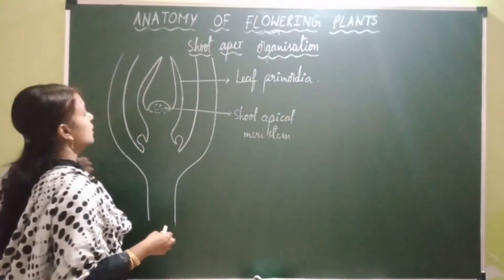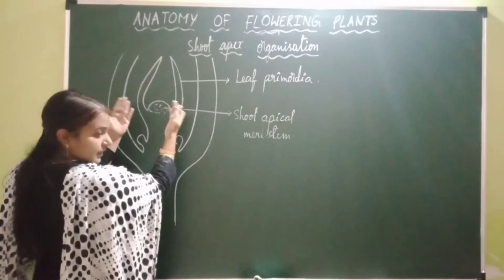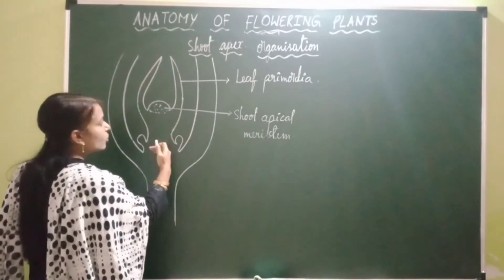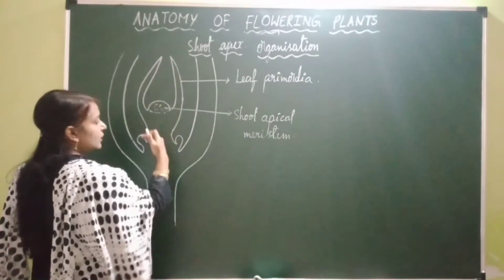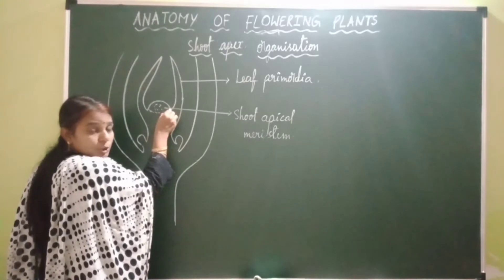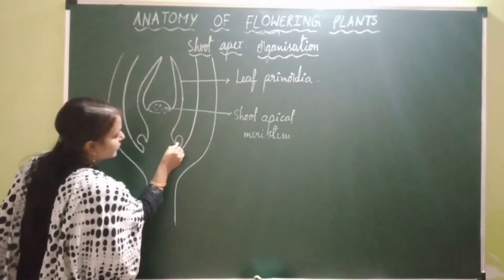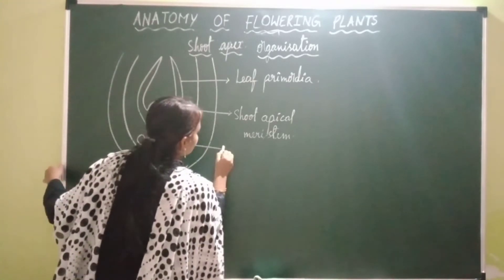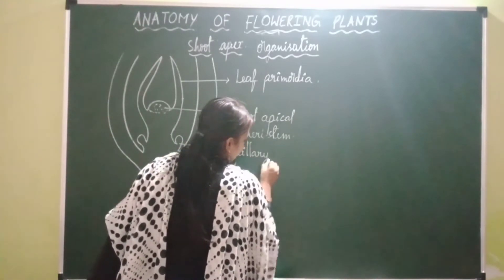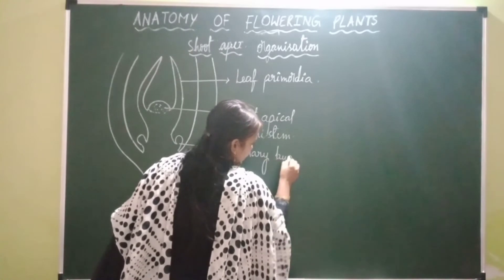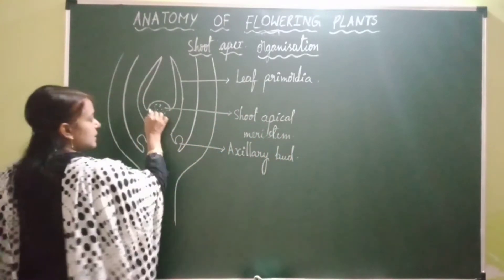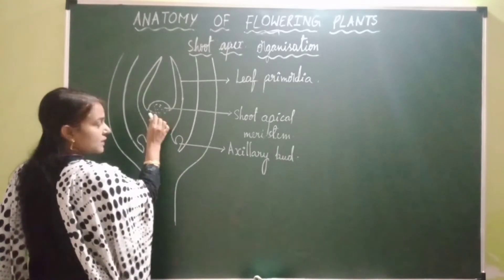Some of the cells flanking towards the lateral side are left behind during the growth of the shoot. These cells, left behind at the shoot apical meristem, do not develop into leaves — instead they become the axillary part.